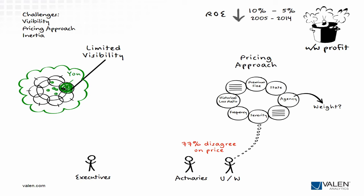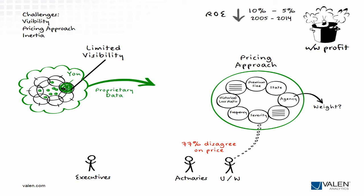This is why companies choose to work with Valen — because we provide unrivaled access to proprietary data for the risks they care about. When you can take all of this data that you've never had access to and combine it with your market knowledge, you end up with a custom database and predictive model designed for your portfolio and strategic goals. You also open up a whole new world of possibilities for your underwriters, who add the critical human element that computers will never be able to replace. Now your underwriters can make more informed, data-driven decisions on each account.